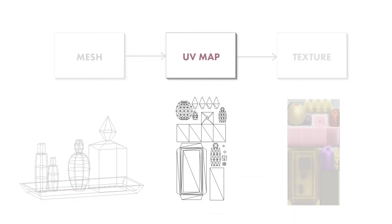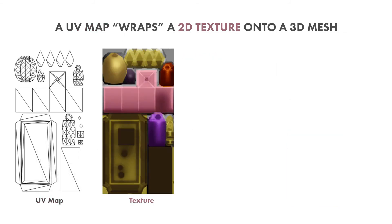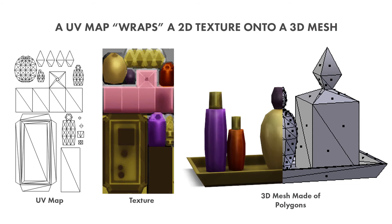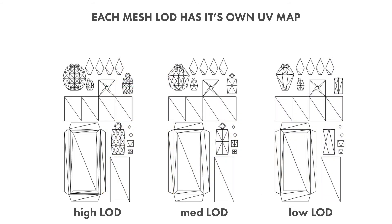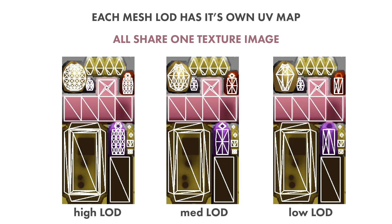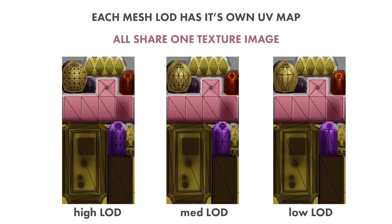Once we have the mesh built, the next step is to create a UV map. The UV map wraps a 2D texture onto a 3D mesh. The name UV map makes sense when you break it down — 3D objects use X, Y, and Z as a coordinate system, and 2D images use U and V as their coordinate system. So because a UV map is literally mapping a 2D texture to a 3D object using UV coordinates, it is called a UV map. A really important aspect of UV maps is that each LOD has its own UV map, but they all share one texture. You almost always want to build the highest LOD first, make its UV map, make the texture, test it in game, and then move on to making the lower LODs — making lower LODs is one of the last things I do, which is something I learned the hard way.